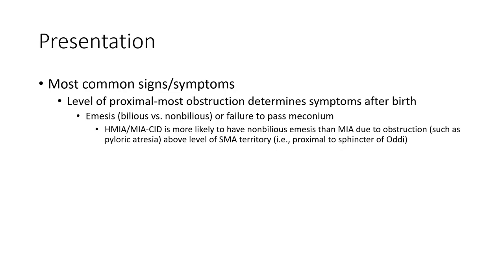Most common presenting symptoms include levels of proximal bowel obstruction, vomiting, and failure to pass meconium. HMIA-CID is more likely to have non-bilious emesis than HMIA due to obstruction above the level of the superior mesenteric artery.